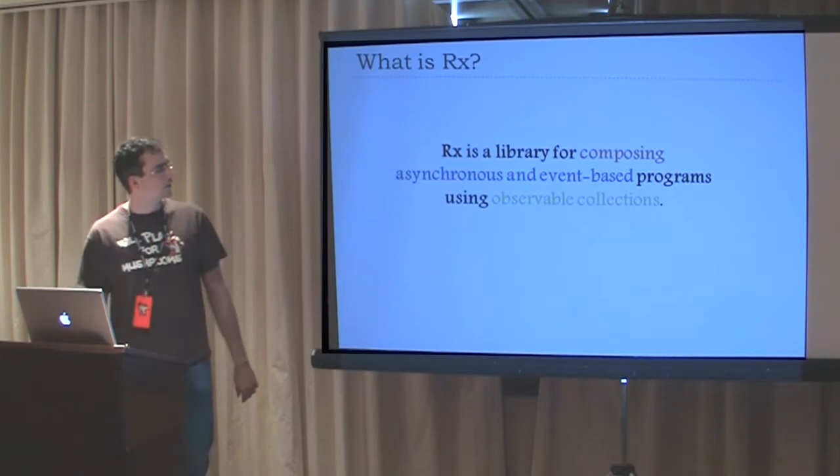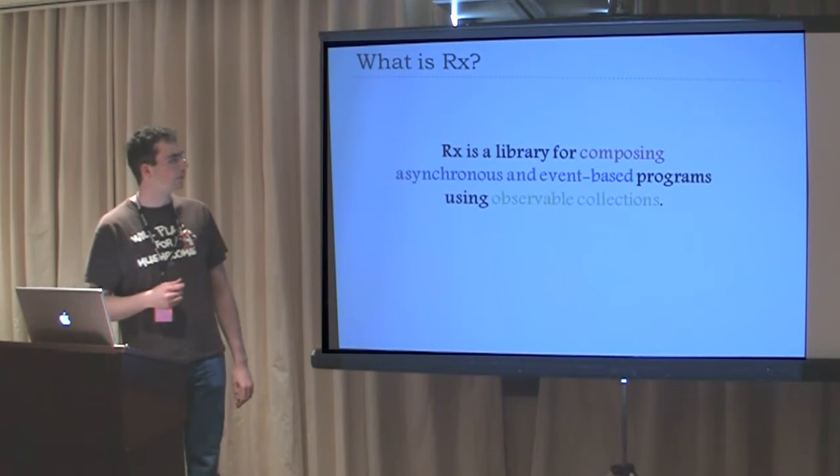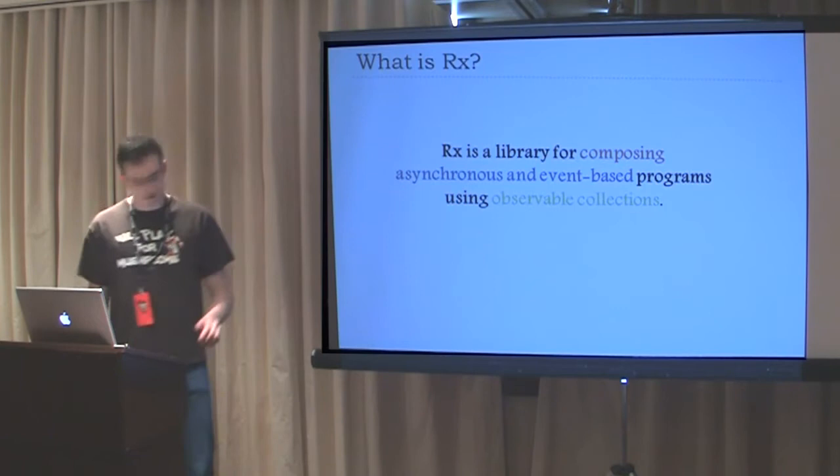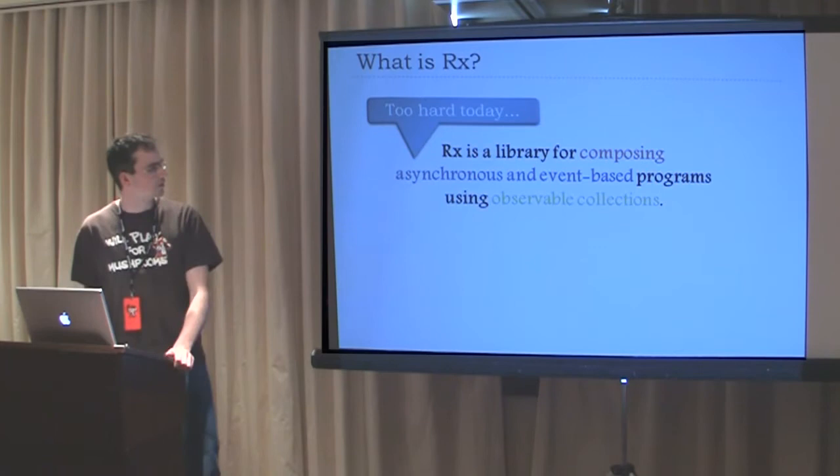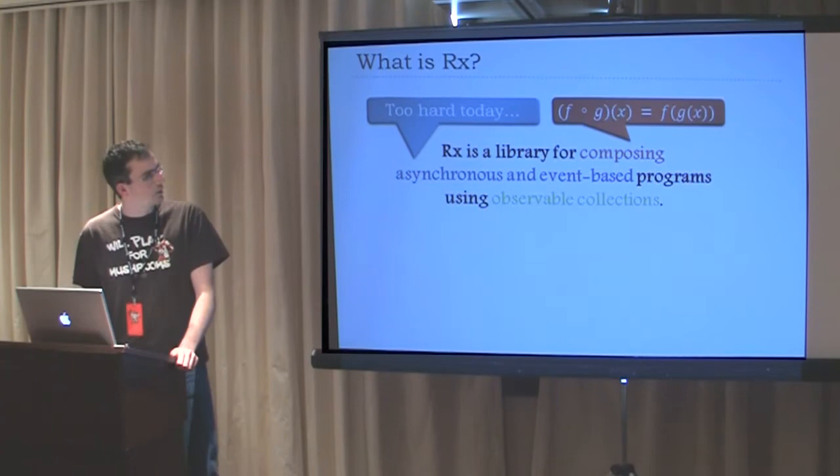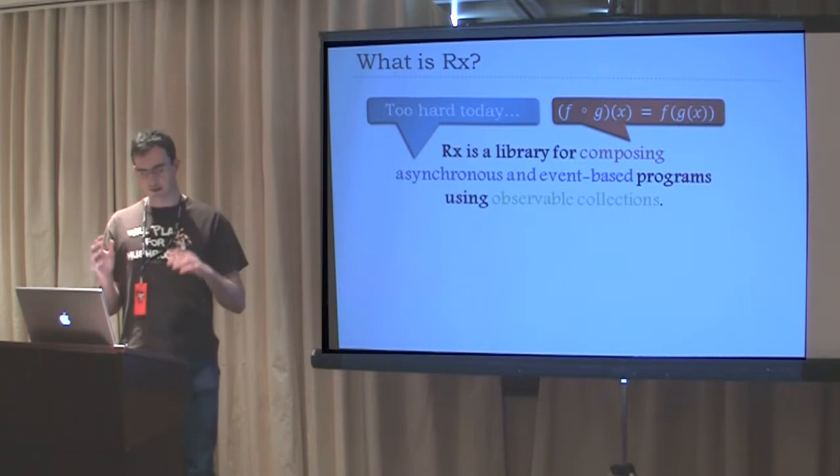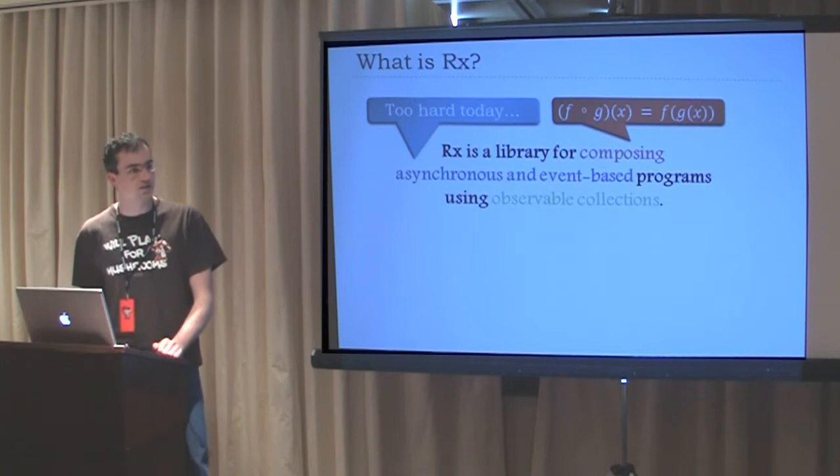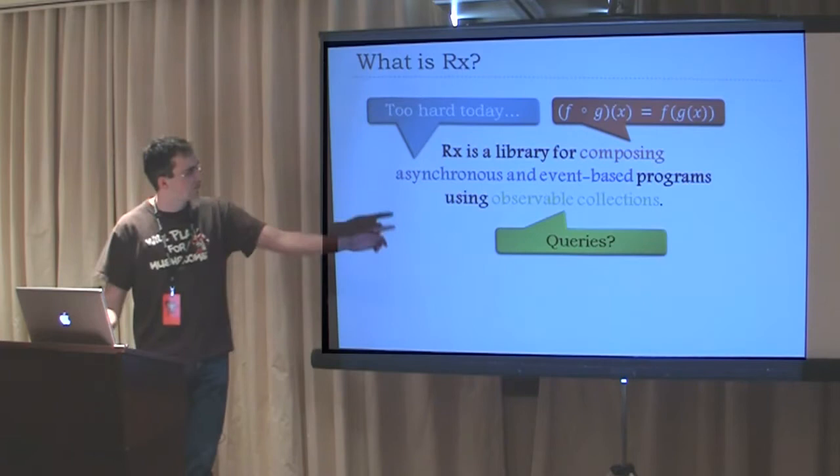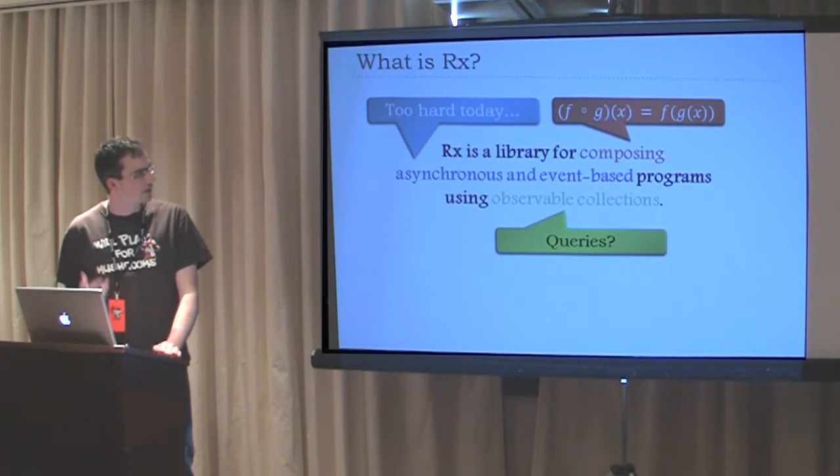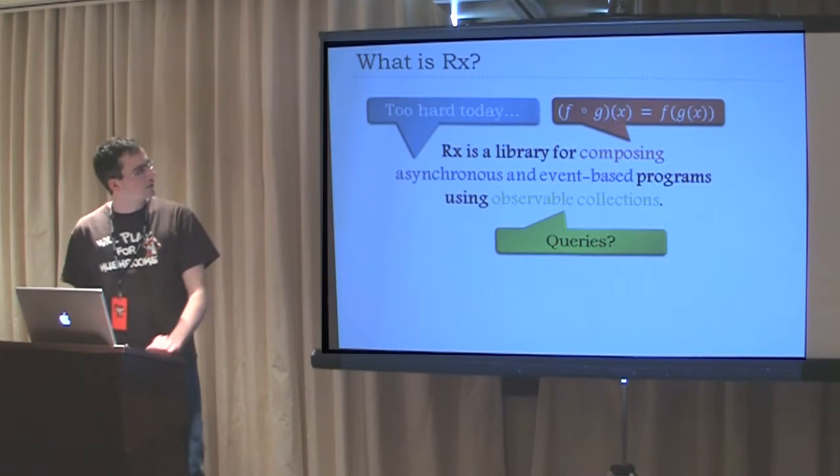If we look at Rx, our homepage tagline says: Rx is a library for composing asynchronous and event-based programs using observable collections. Let's dissect that. Asynchronous programming is pretty hard right now, so we want to make that better. We want to compose events with a fluent API - do this, followed by the next operation, instead of wrapping your program inside out with continuation passing. Observable collections means we can do queries - databases are all about collections, flat tables of data.